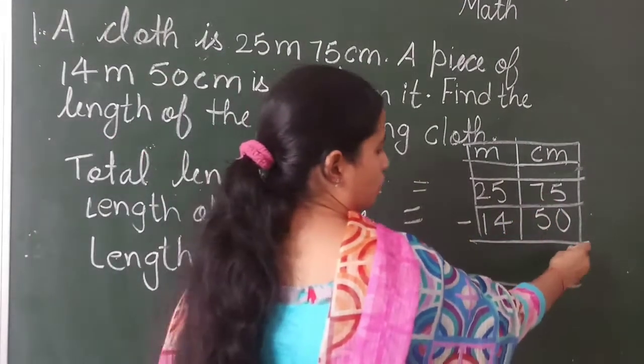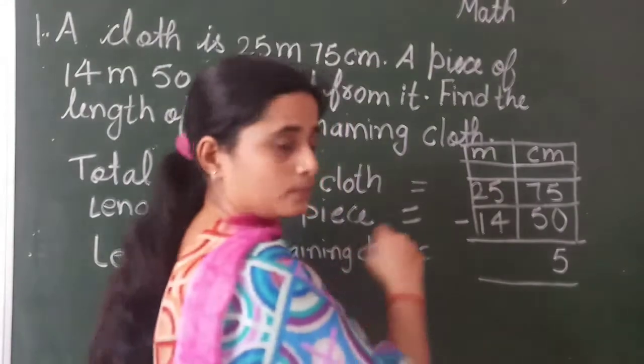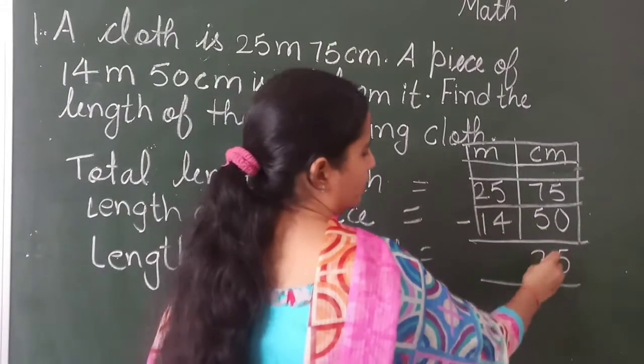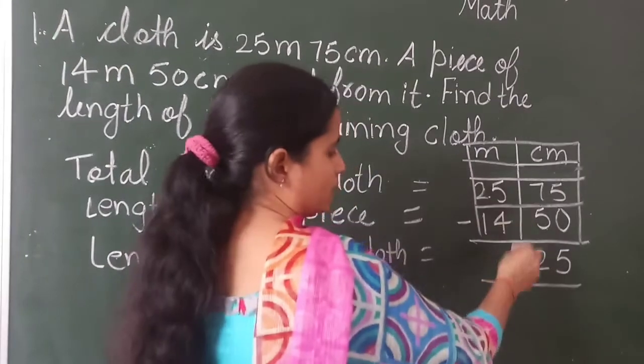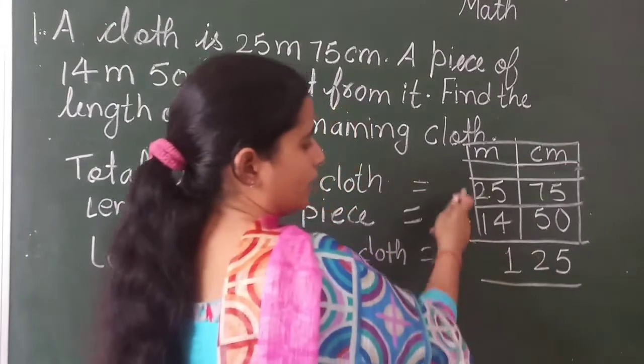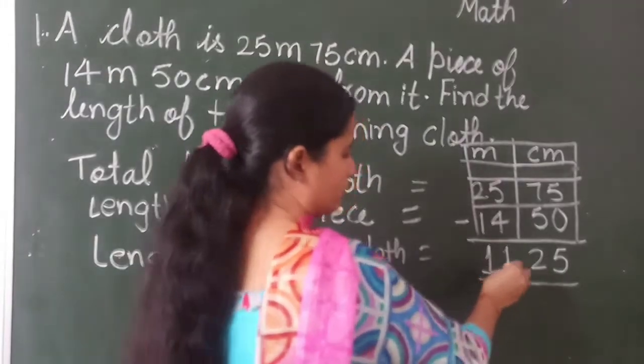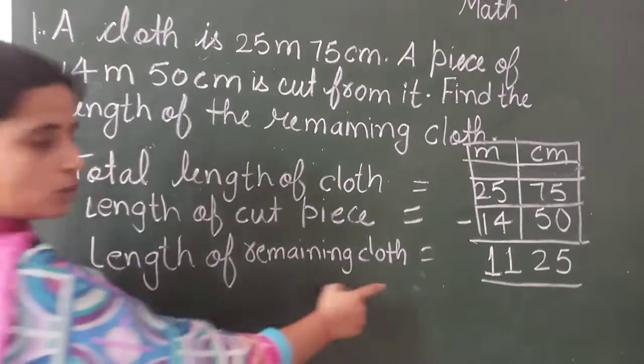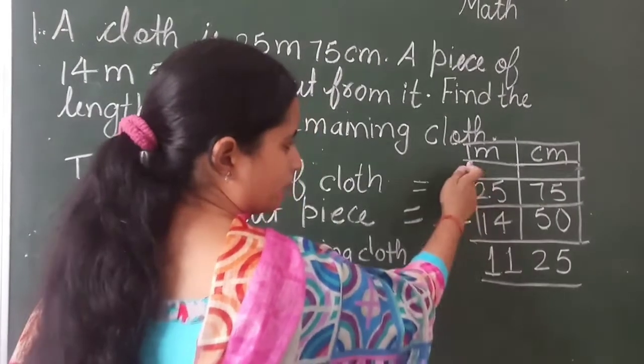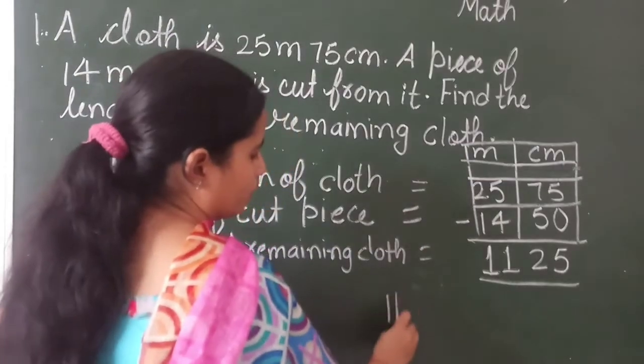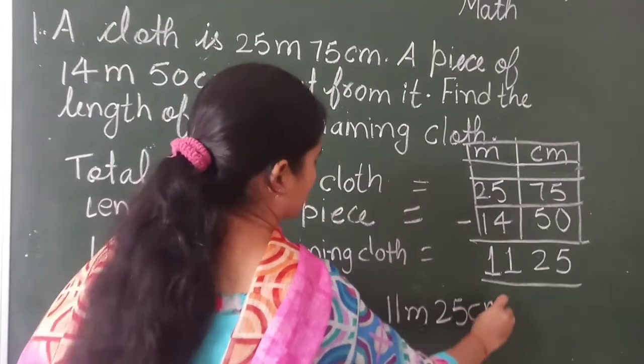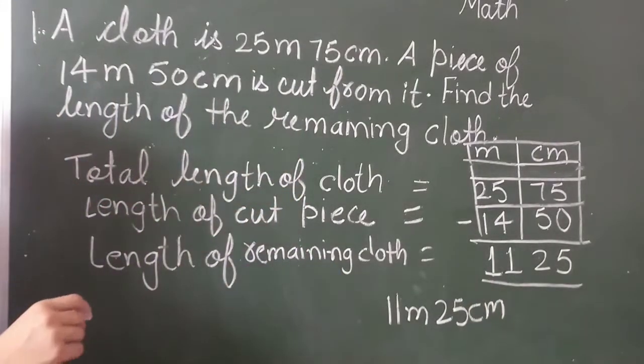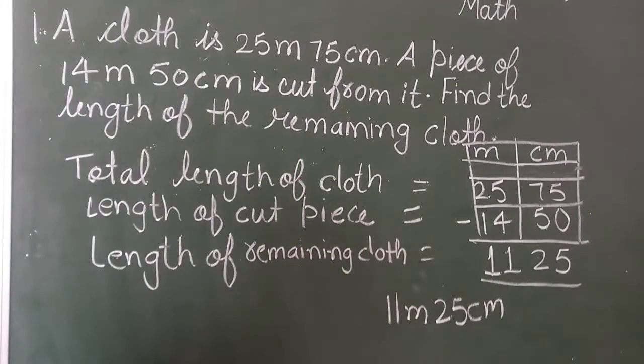5 minus 0 it will be 5. 7 minus 5 it is 2 and 2 minus 4 it is 5 minus 4 is 1 and 2 minus 1 is 1. So it means the length of remaining cloth is 11 meter and 25 centimeter. So this is the length of the remaining cloth.